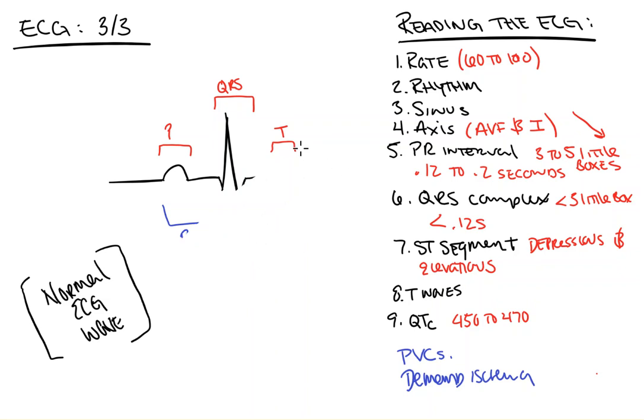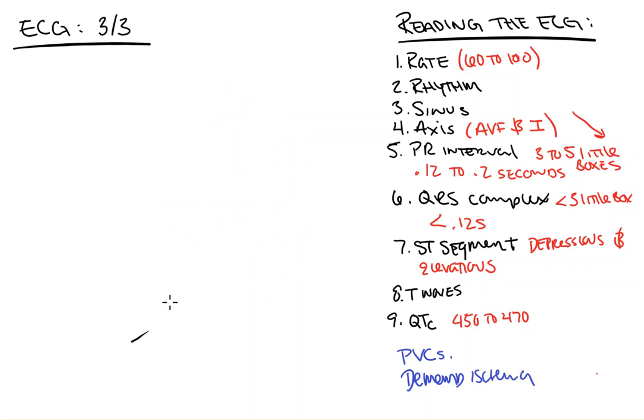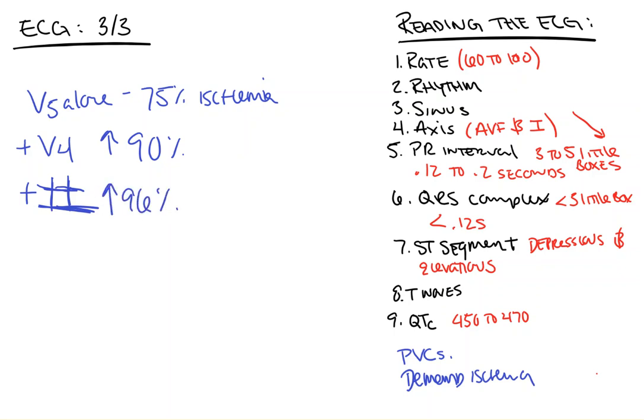Now, the last thing that I want to touch on that you will see on your exams at some point, especially in anesthesia, is which leads are sensitive and specific for ischemia. V5 alone will detect 75% ischemia, or ischemic incidences. If you add V4, this increases to 90%, and if you then add lead 2, as in we're going to use all three of these, then you get 96% detection of ischemia. Again, I promise this will come up on your exams, be it your ITE, your boards, or your AKTs.